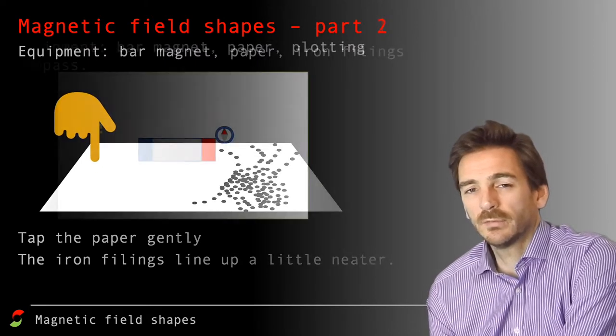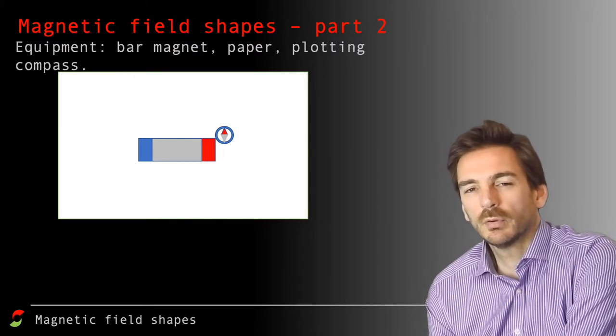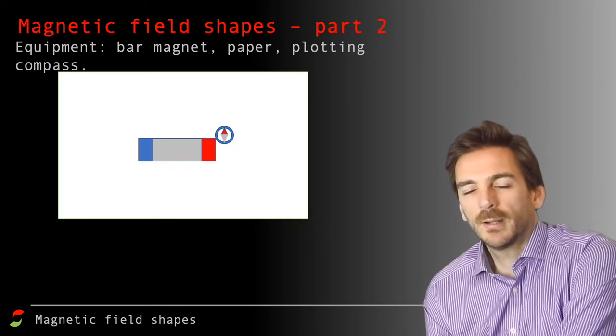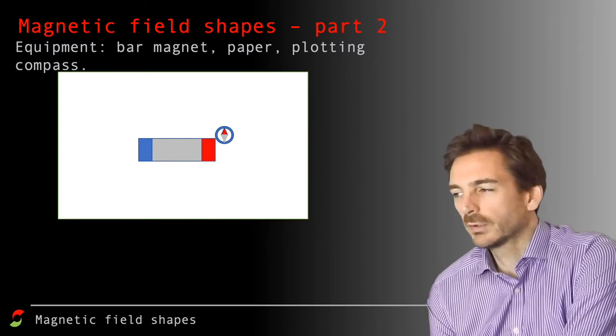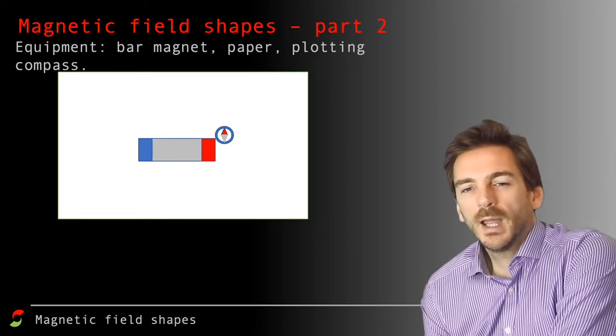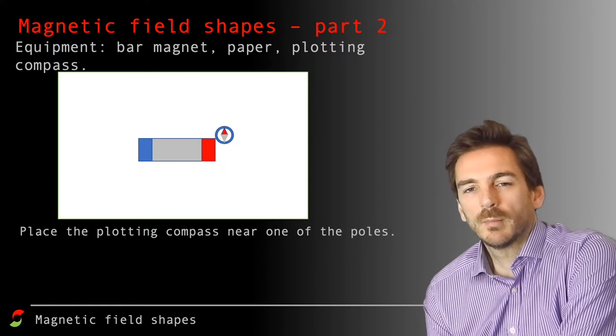A second method will be using similar equipment, bar magnets and a piece of paper, pencil as well is important. But this time, something called a plotting compass. You get the plotting compass and like here, you place it at one end of the bar magnet, usually in a corner to start off with.